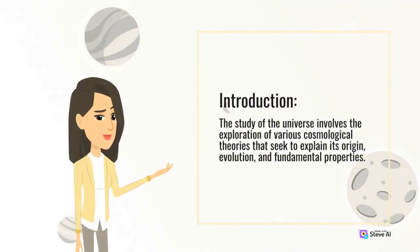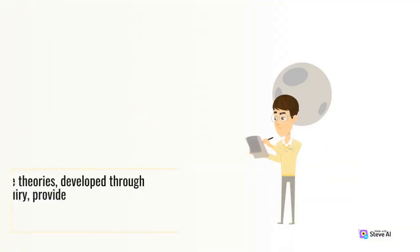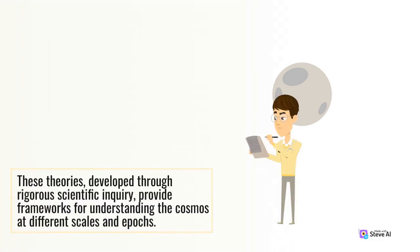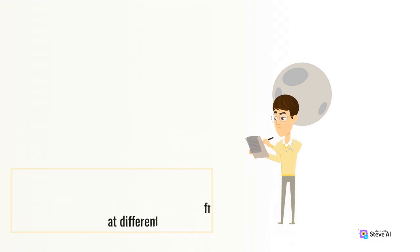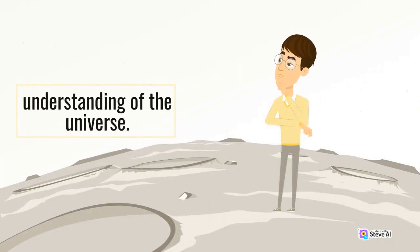The study of the universe involves the exploration of various cosmological theories that seek to explain its origin, evolution, and fundamental properties. These theories, developed through rigorous scientific inquiry, provide frameworks for understanding the cosmos at different scales and epochs. In this article, we will examine the correlation between cosmological theories, highlighting their similarities, differences, and interactions, which collectively contribute to our comprehensive understanding of the universe.